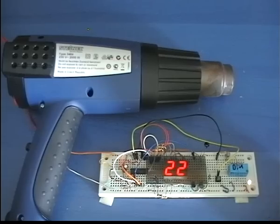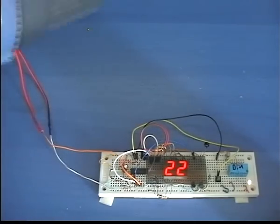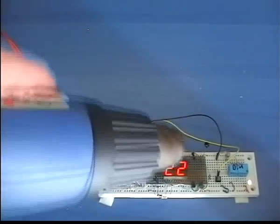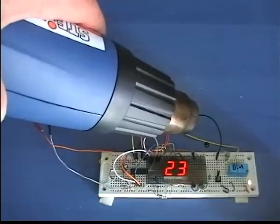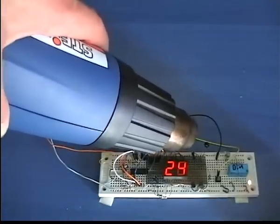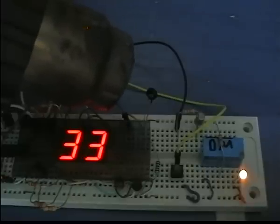Watch what happens as the thermistor is heated up. The temperature is rapidly raised. When it goes above the high setpoint, the LED is turned off, indicating that the relay is disarmed.